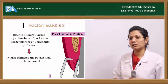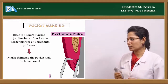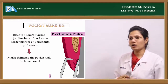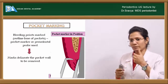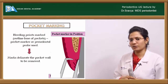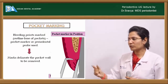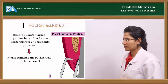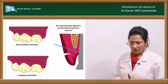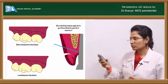Place the pocket marker into the gingival sulcus, tilt to the depth of the pocket, and mark the bleeding points. The toothed end of the pocket marker comes onto the external surface of the gingiva while the other end goes into the sulcus; pressing both marks the bleeding points outlining the pocket base. Once done, decide whether to give continuous or discontinuous incisions.